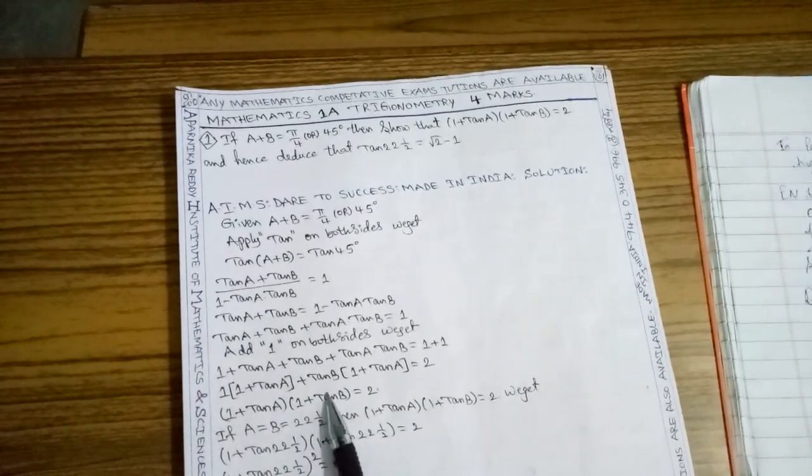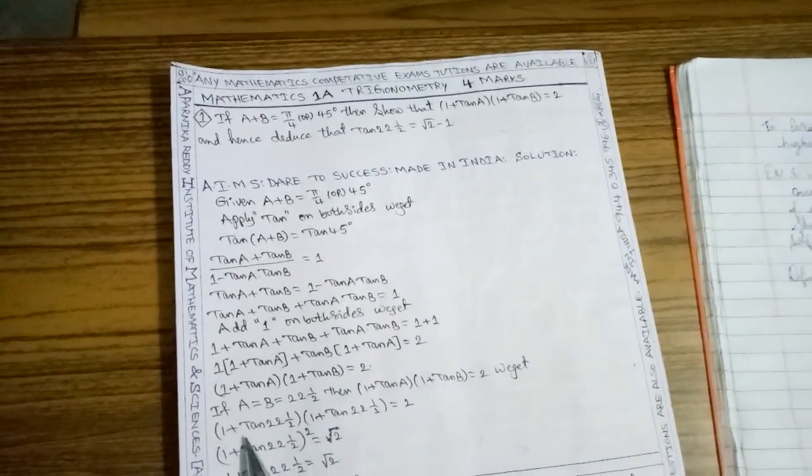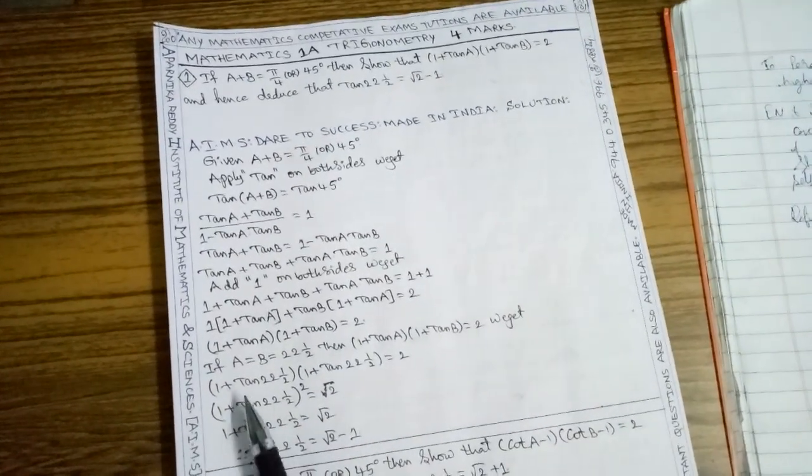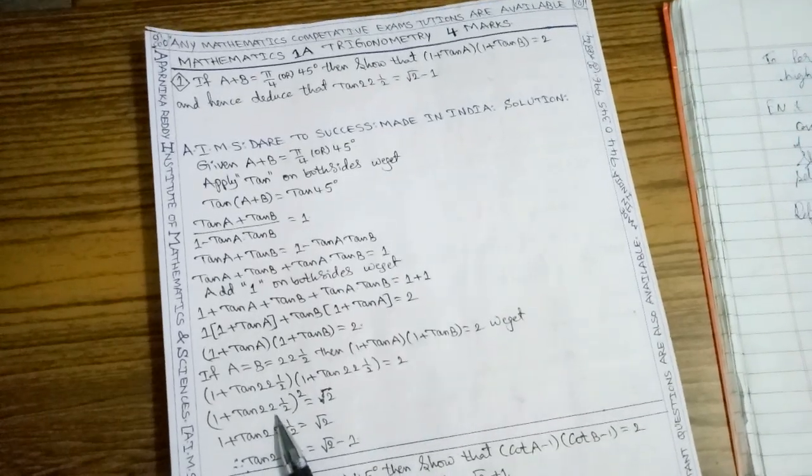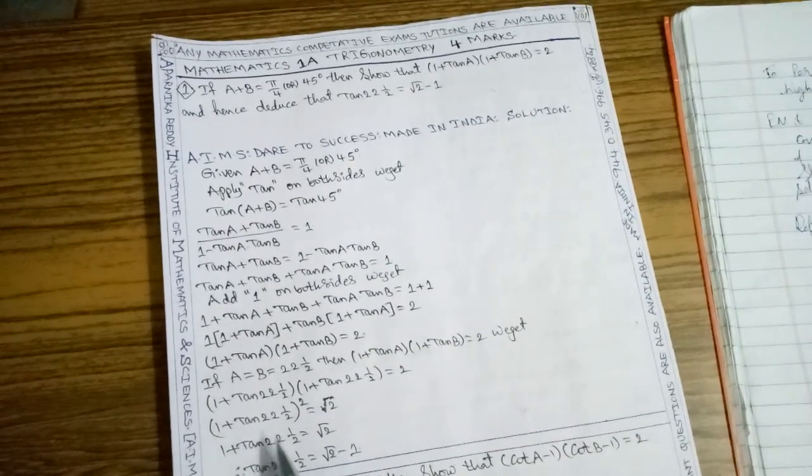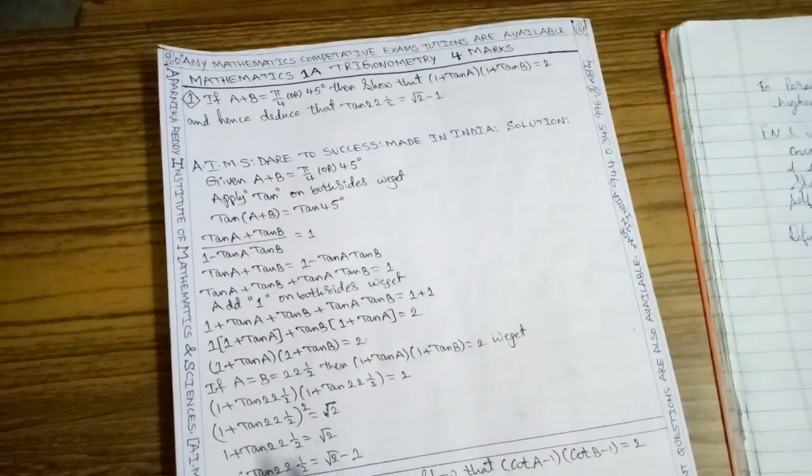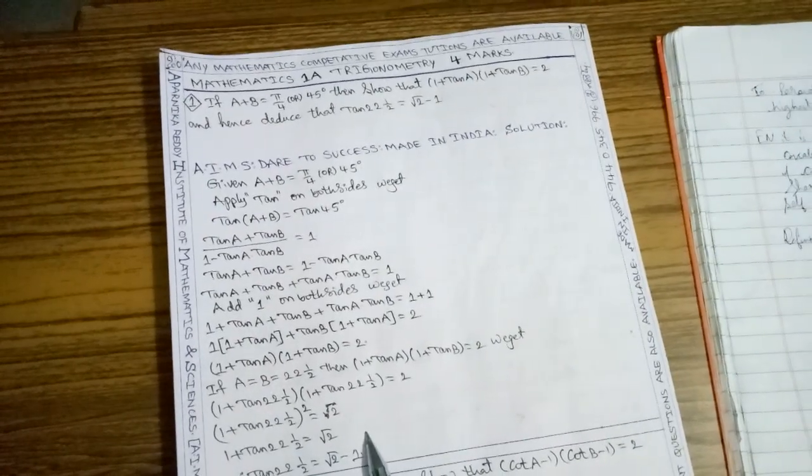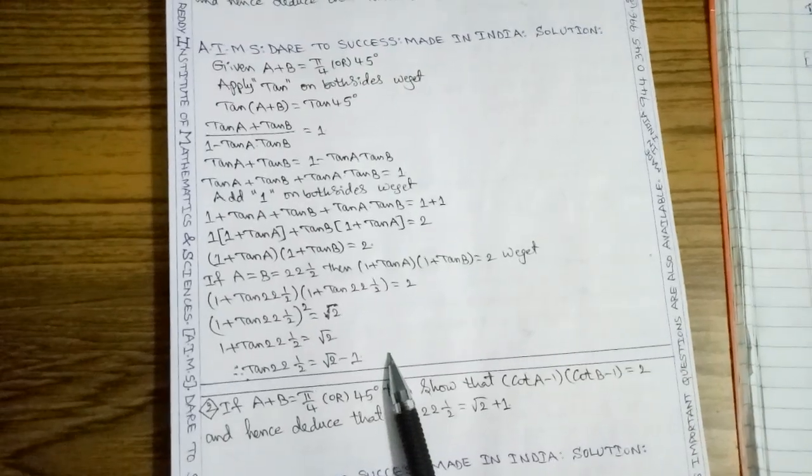Then (1 plus tan 22.5) times (1 plus tan 22.5) equals 2. Squaring, we get (1 plus tan 22.5) squared equals 2. Taking the square root, 1 plus tan 22.5 equals root 2. Moving 1 to the right side, tan 22.5 degrees equals root 2 minus 1.